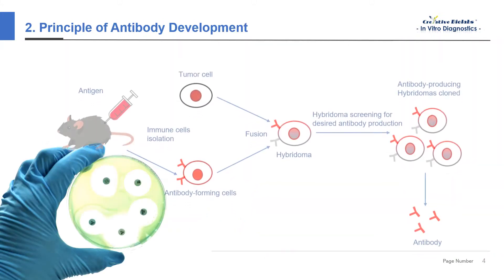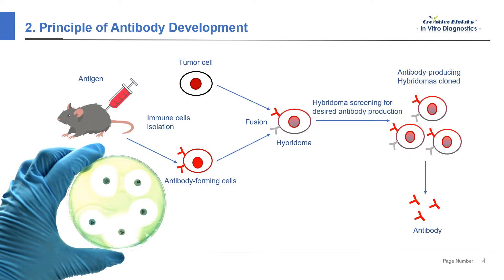B-lymphocytes producing specific antibodies can be obtained by injecting antigen into mice, but B-lymphocytes cannot proliferate indefinitely and cannot grow in vitro. However, myeloma cells can grow indefinitely in vitro. The hybridoma technique is to fuse myeloma cells with immunized lymphocytes to obtain hybrid myeloma cells. Such cells are characterized by the production of specific antibodies and long-term in vitro proliferation. Specific antibodies against one or more antigenic determinants can be prepared by using a population of cells derived from a single fused cell culture.